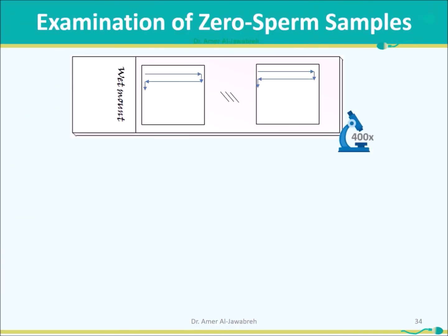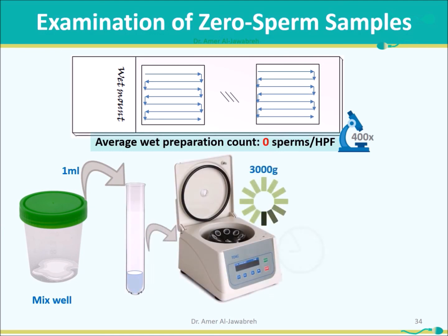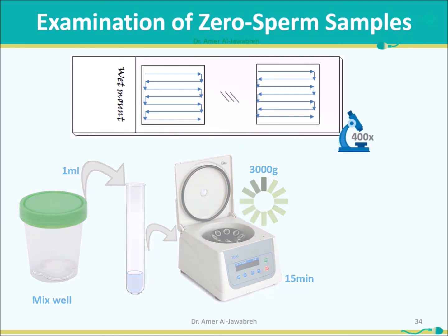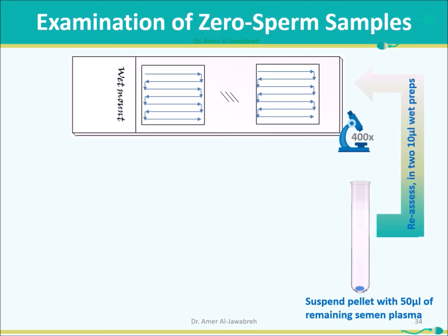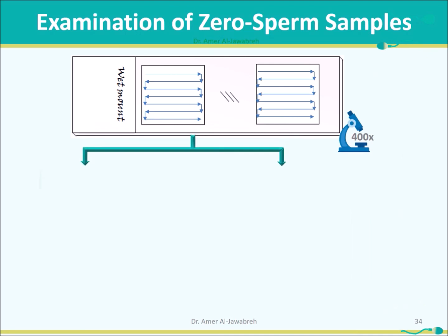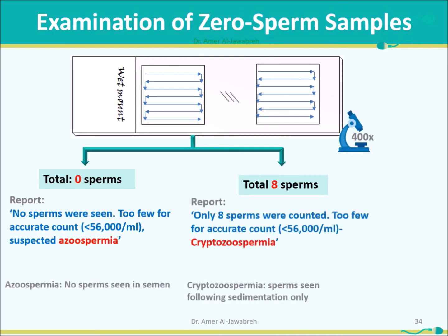Examination of zero-sperm samples: If no sperms are seen in the wet preparation, perform sedimentation. Centrifuge at least 1 mL of semen at 3000 g for 15 minutes — a pellet will form. Aspirate the semen plasma, then suspend the pellet in 50 µL of remaining semen plasma. Reassess by preparing two wet preps. If total sperms is zero, report: 'No sperms seen. Too few for accurate count. Less than 56 thousand per mL. Suspected azoospermia.' If a few sperms are seen (e.g., 8), report the count as too few for accurate count, less than 56 thousand per mL.